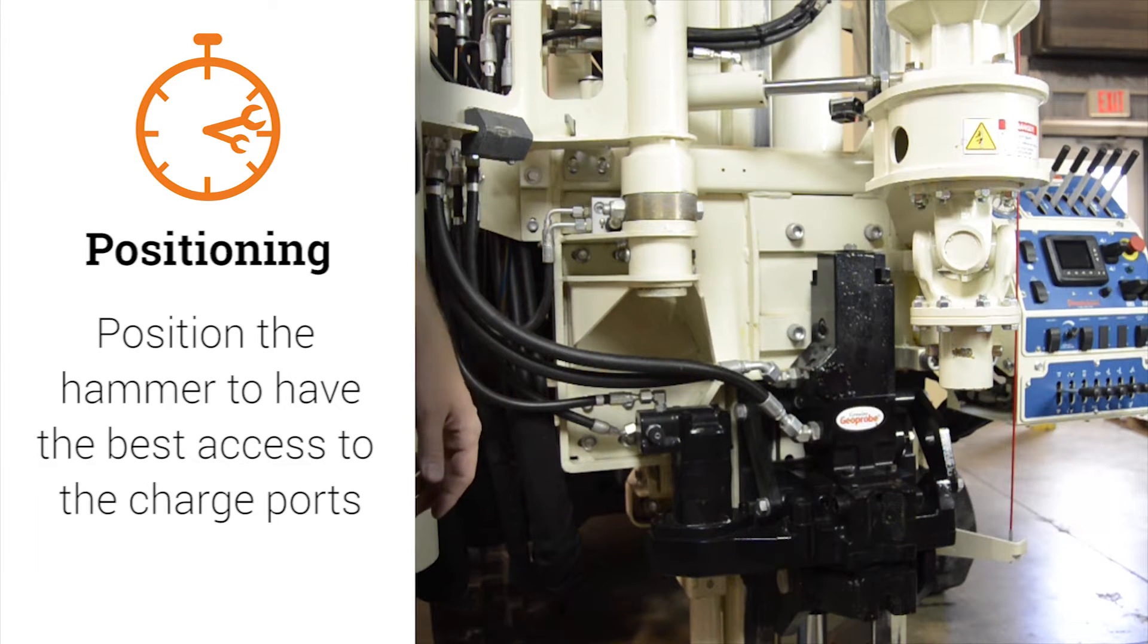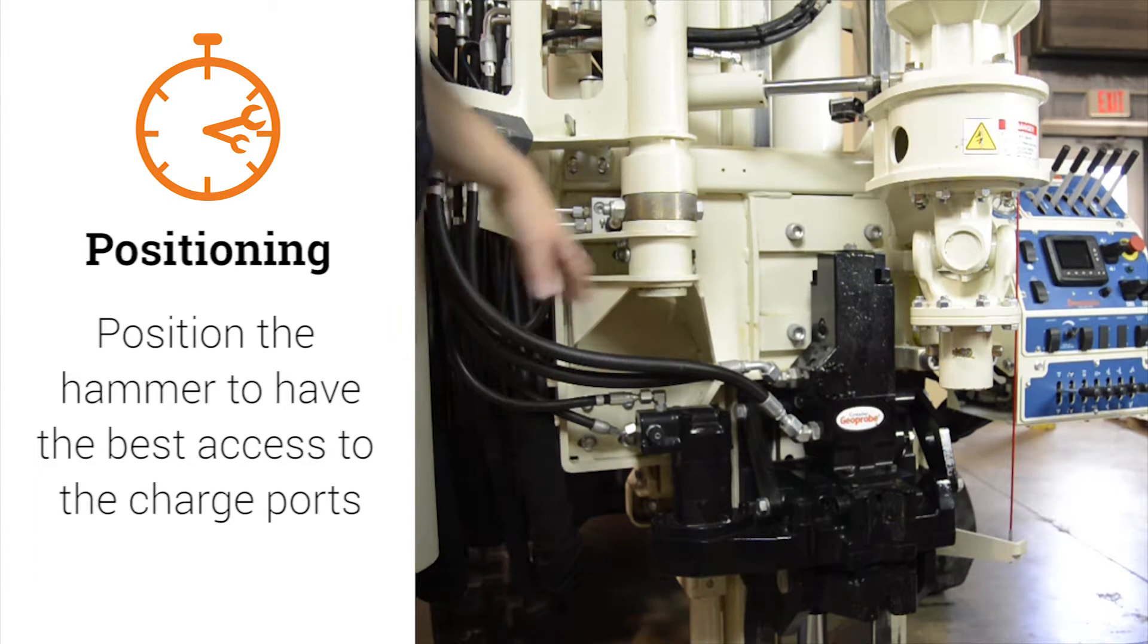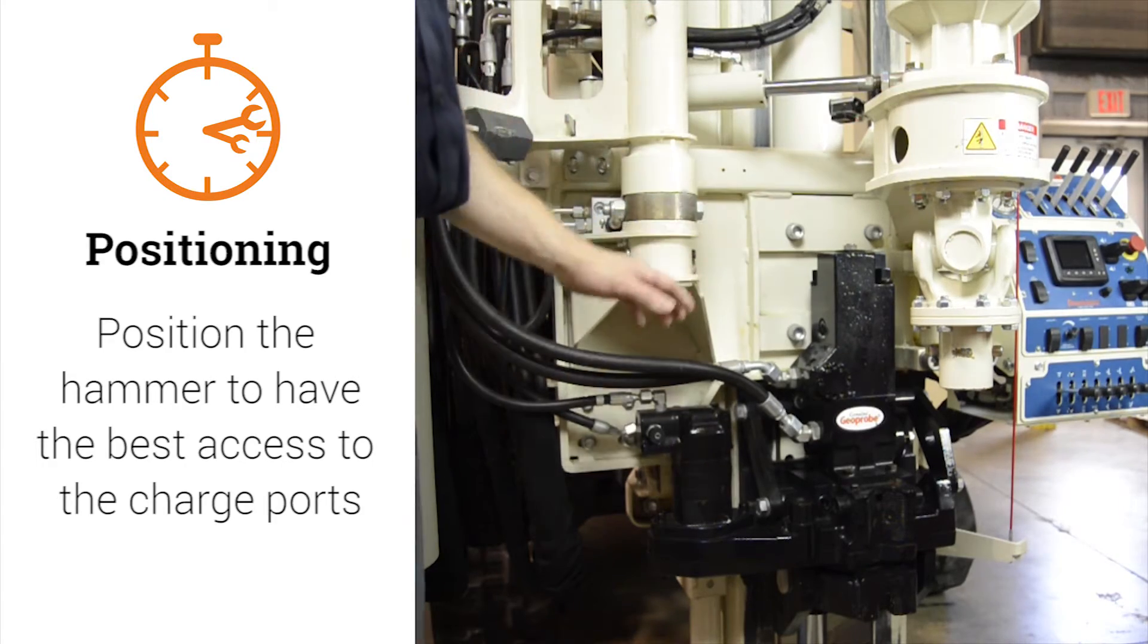Position the hammer so you have the best access to the charge ports. On this 7822 DT, I move the drop hammer and the auger out of the way and position the hammer about a foot off the ground.